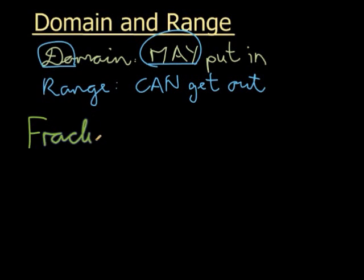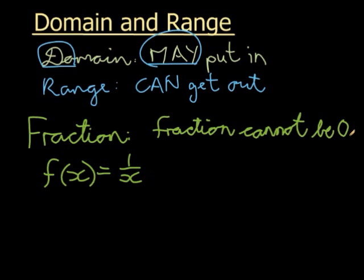If I have a fraction, for example, let's assume that I have f(x) is equal to 1 over x. That is my fraction. A fraction cannot be 0. I mean, it cannot be 0 if the numerator is not 0. It doesn't matter what denominator I use, it can never be 0.